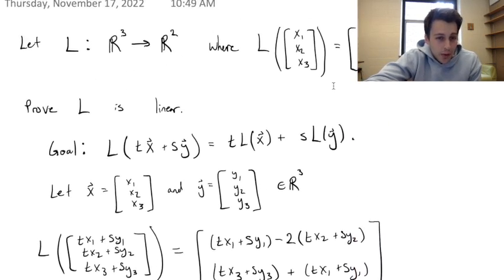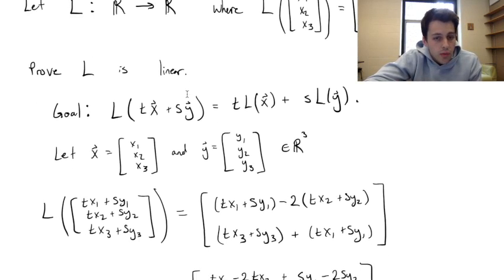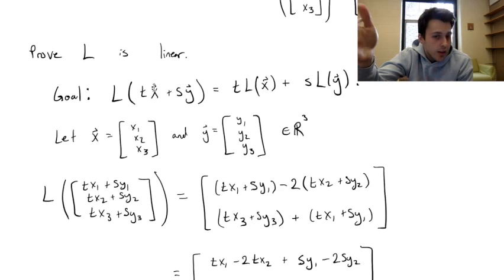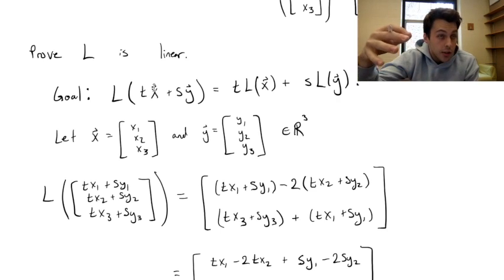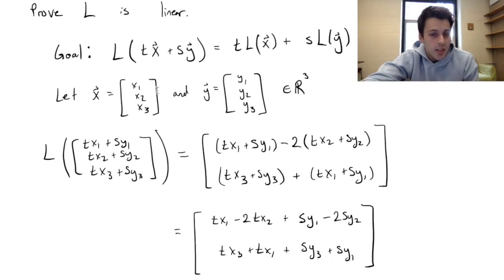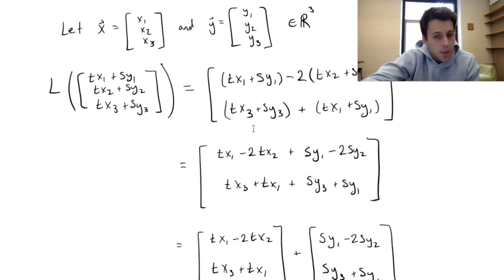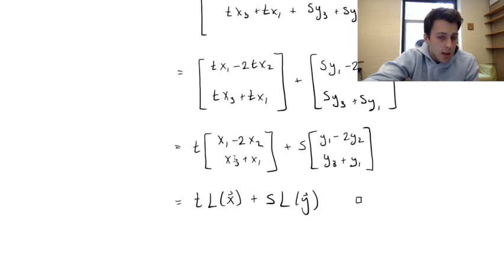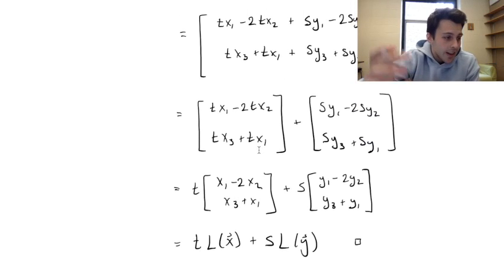To summarize: we are given this linear transformation, already defined for us. We want to prove that it's linear. So we plug in a scalar times a vector plus a different scalar times a different vector, apply the linear transformation, and using algebra, break it up and factor out the scalars. We're left with the scalar times the linear transformed first vector plus the other scalar times the linear transformation of the second vector. And that's all there is to it.